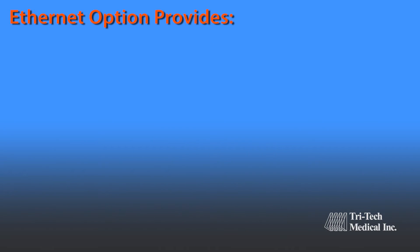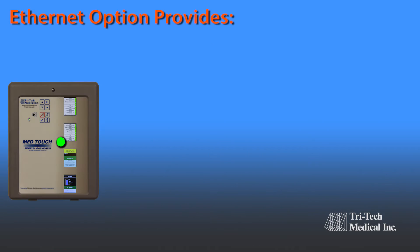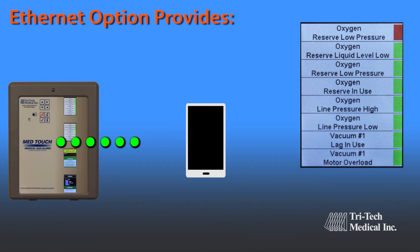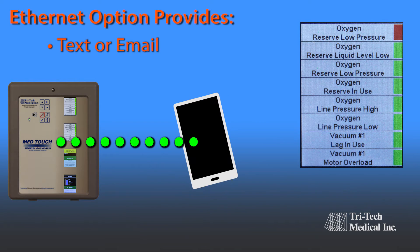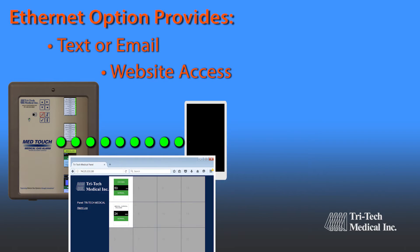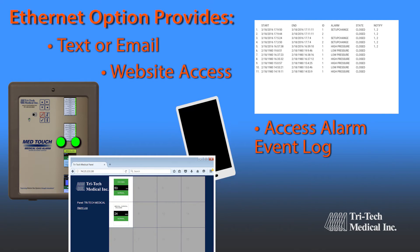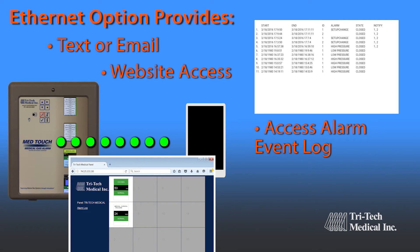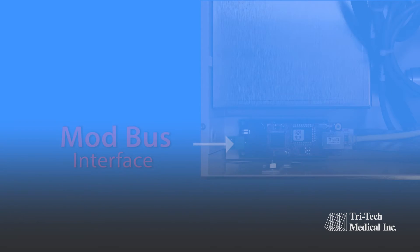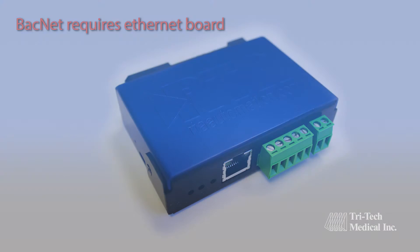Optional features include: the Ethernet option provides additional information directly to the user's mobile device, such as text or email notification of an alarm condition, website access to individual alarms to monitor current conditions, and access to the alarm event log. Also available are a Modbus interface for all Tritec Medical MedTouch series alarms, and an optional BACnet interface.